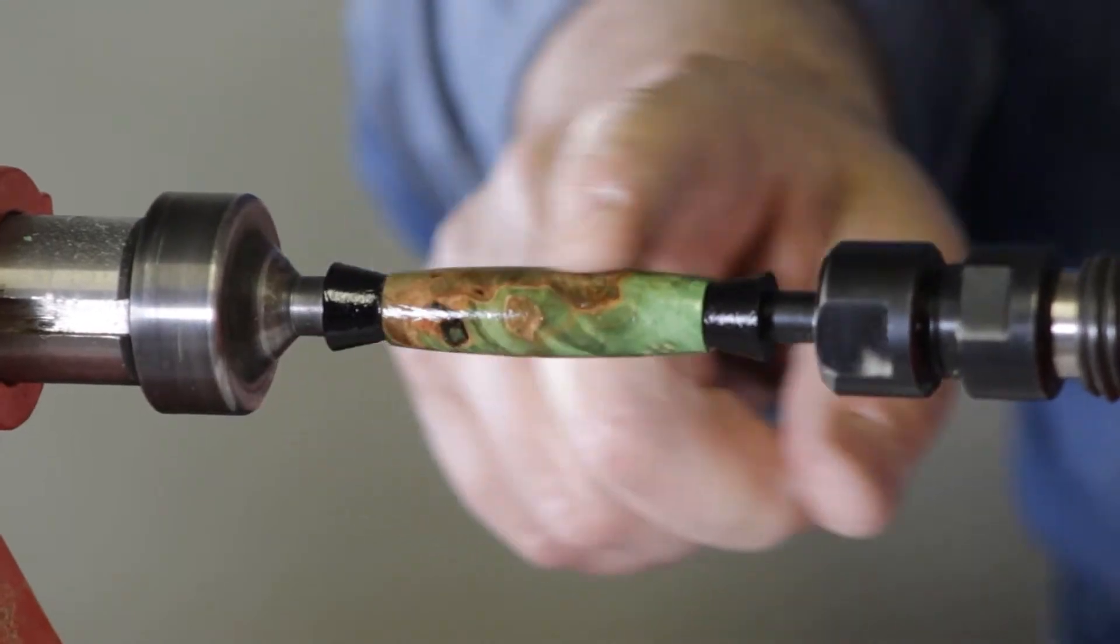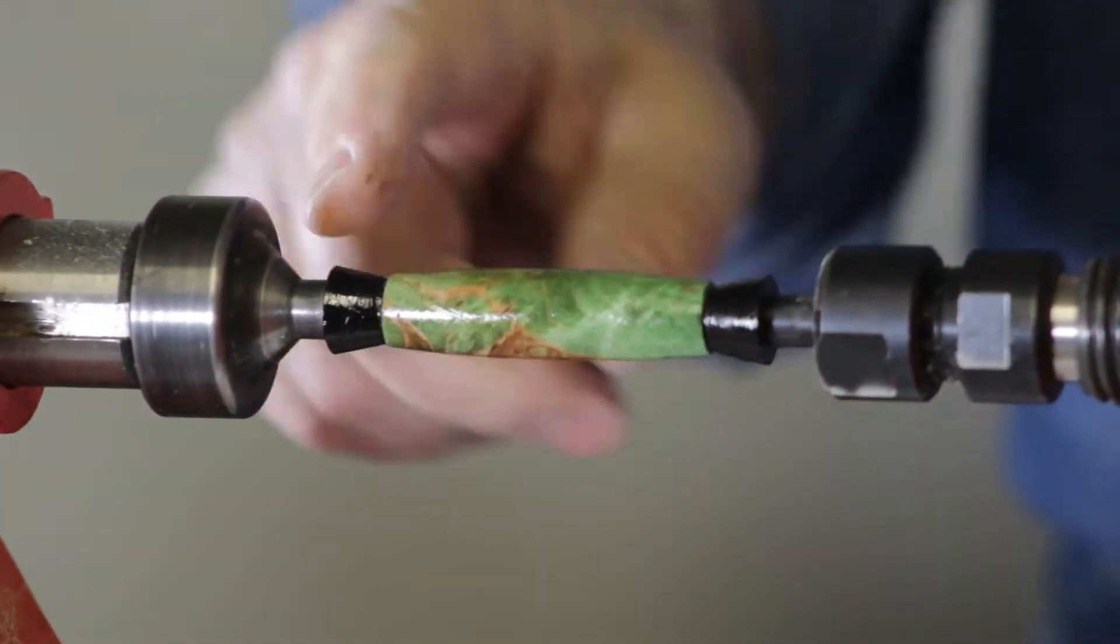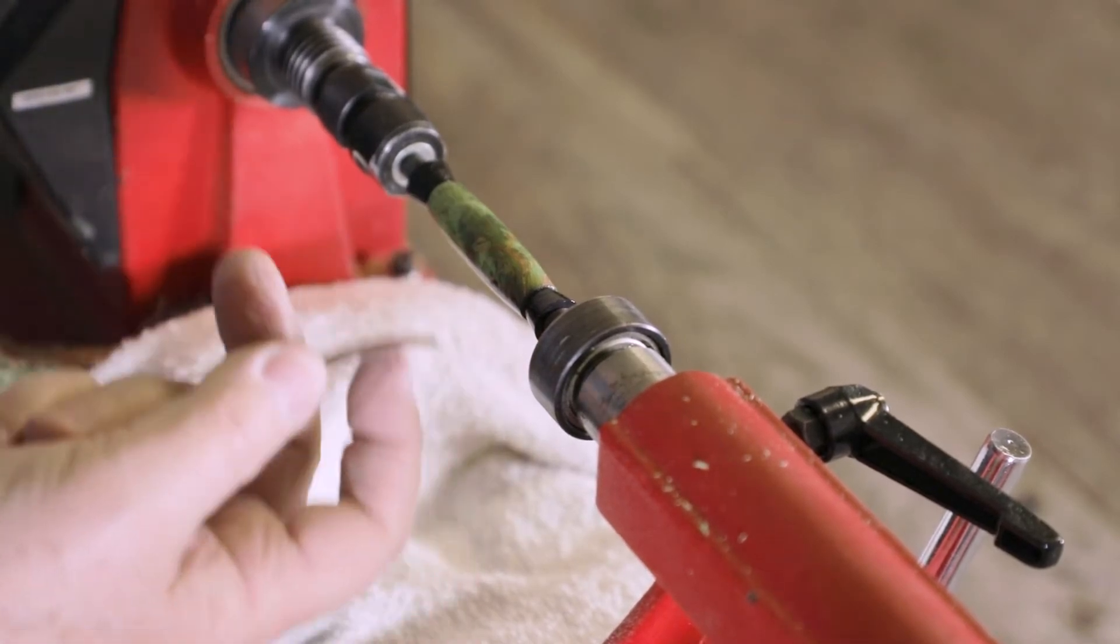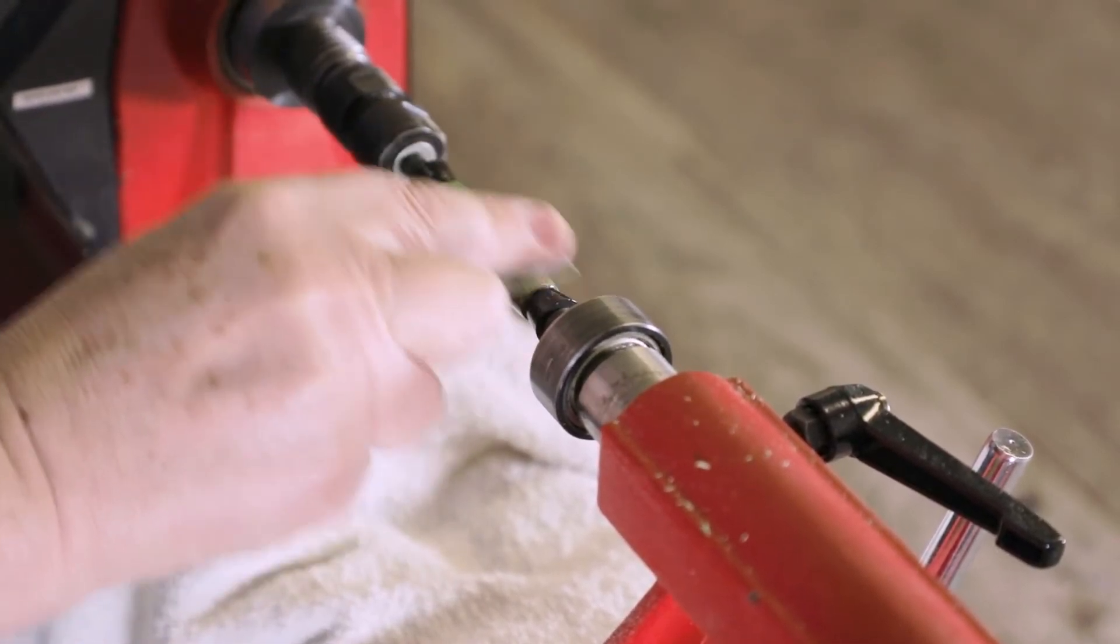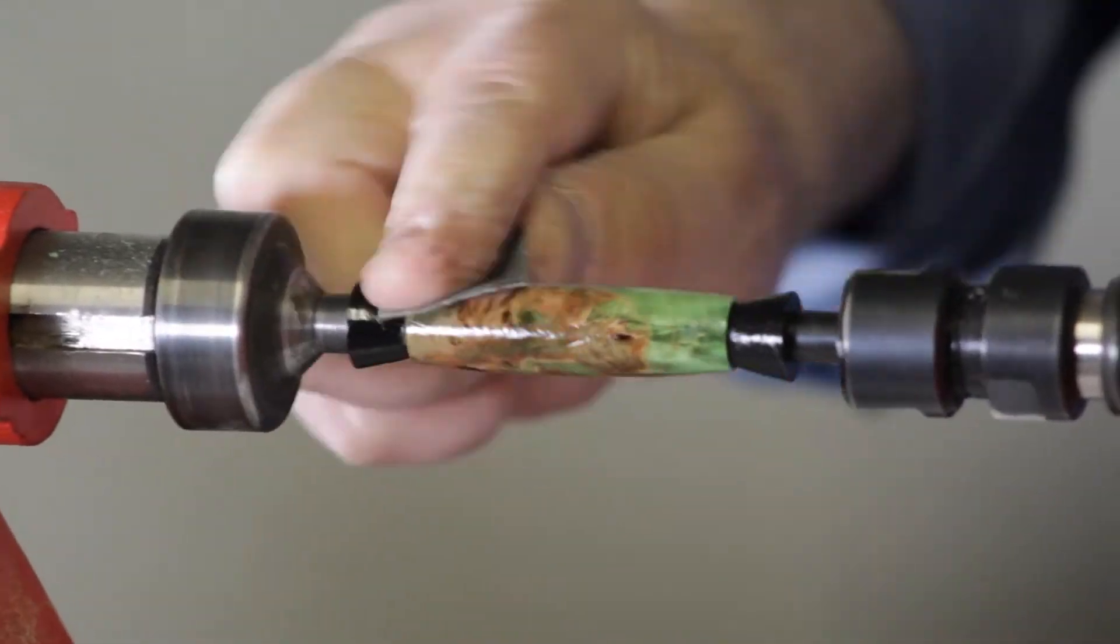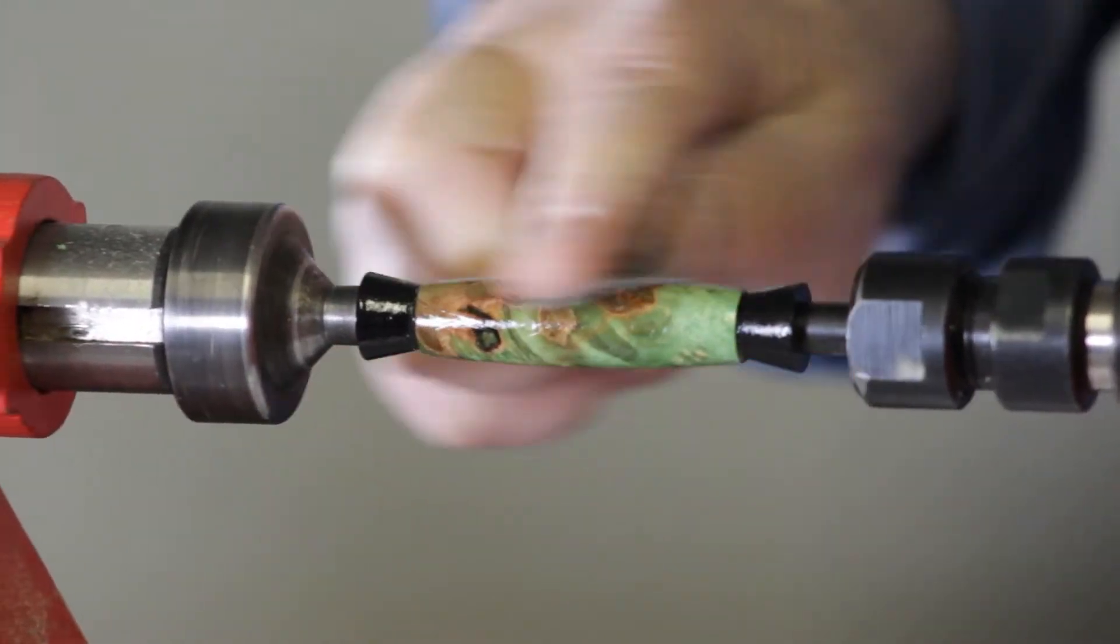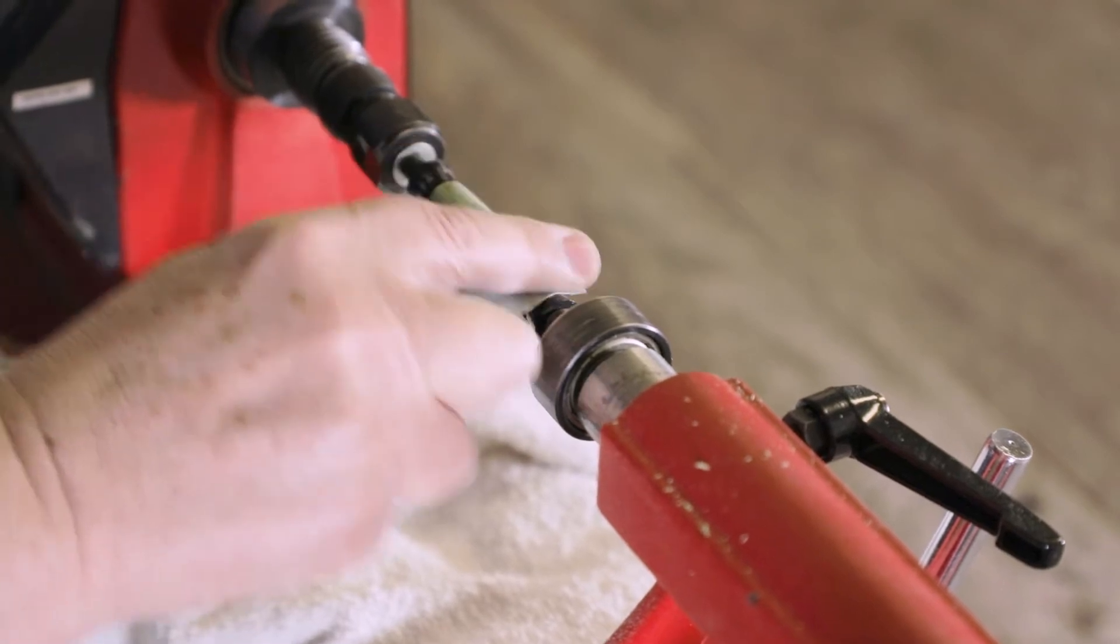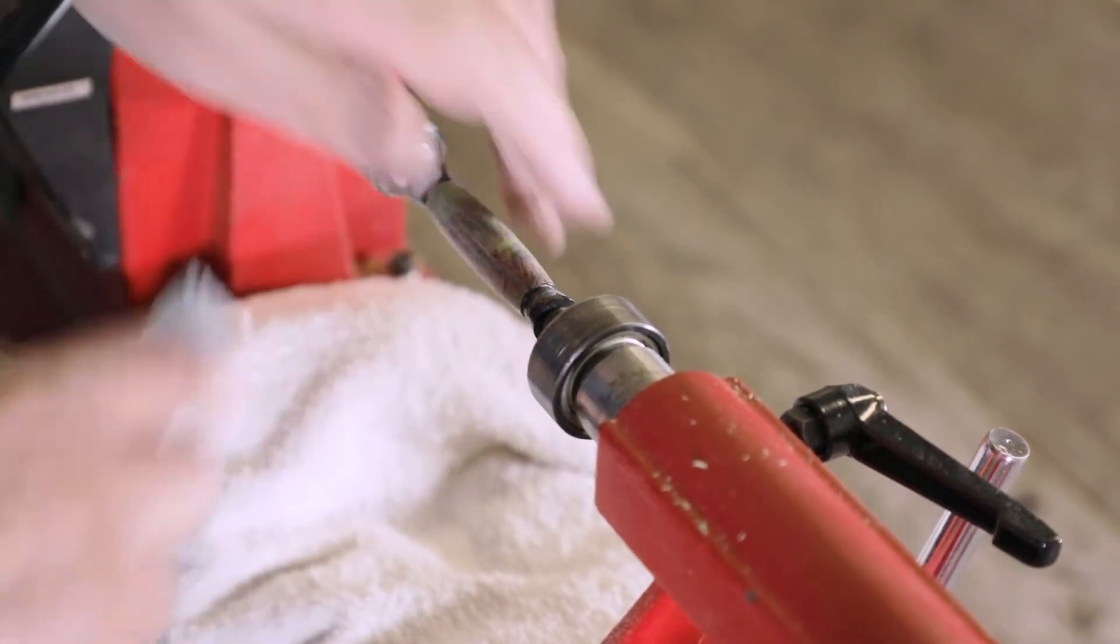And now if I stop this, you can see, it's nice and coated all the way over. It may be a little lumpy, so if you want to, you can take a piece of 600 or whatever, and just lightly sand it like this to get all the lumps down.